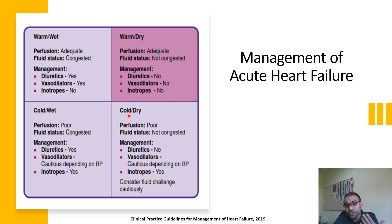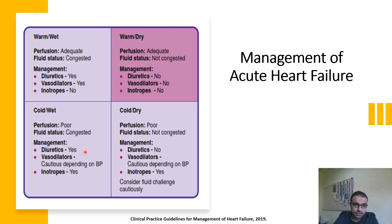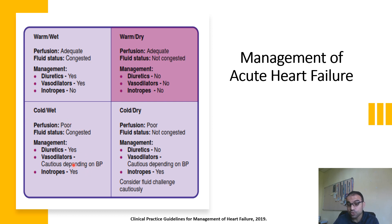Next, the possibility where the issue is in perfusion, not fluid status: perfusion is poor, but there is no congestion or fluid accumulation. No accumulation means no diuretic is needed. Vasodilator use depends on blood pressure, because poor perfusion commonly means blood pressure is too low, and in this case inotropes will be the main agent used. The third possibility is when both are affected — poor perfusion and fluid accumulation. Management includes diuretics to address congestion and inotropes to address poor perfusion, with vasodilators added according to blood pressure monitoring.